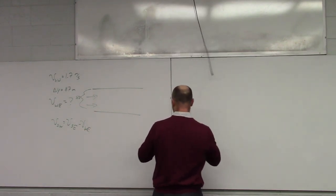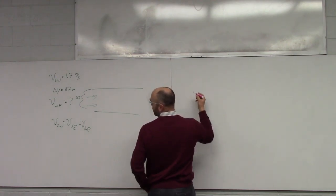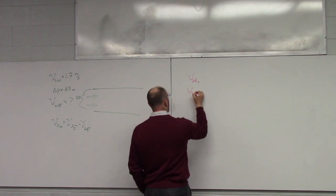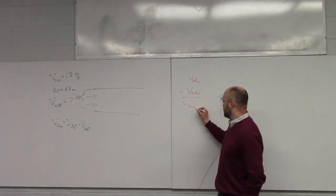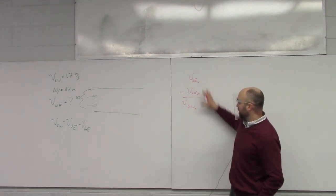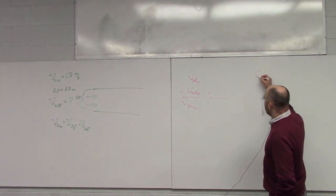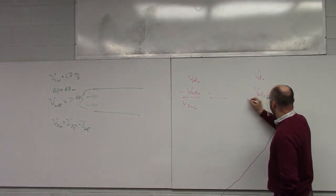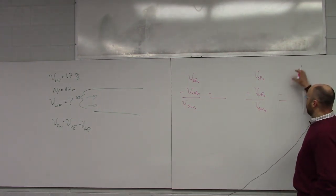Let's write this out in vertical form. Velocity of the swimmer from the Earth's perspective, x. Velocity of water, Earth's perspective, x. Subtraction is velocity of swimmer from the water's perspective. You have to break this down in x and y separately. Then the same thing in the y direction: velocity swimmer-Earth-y, minus velocity water-Earth-y, minus velocity swimmer-water-y. Now we fill in these six numbers.